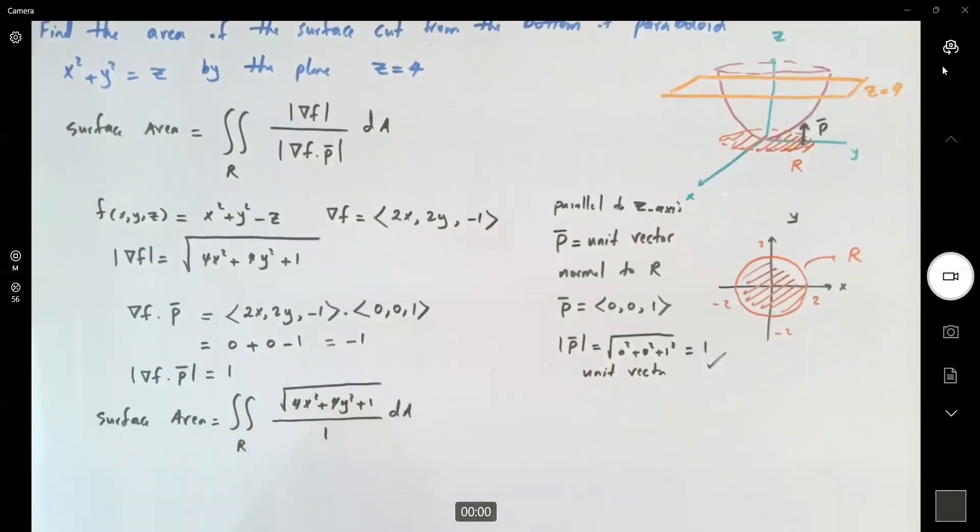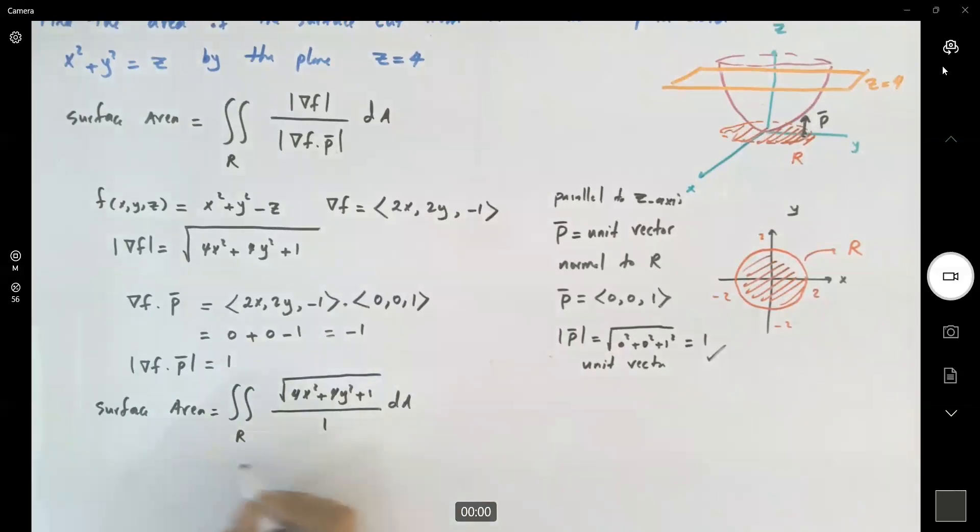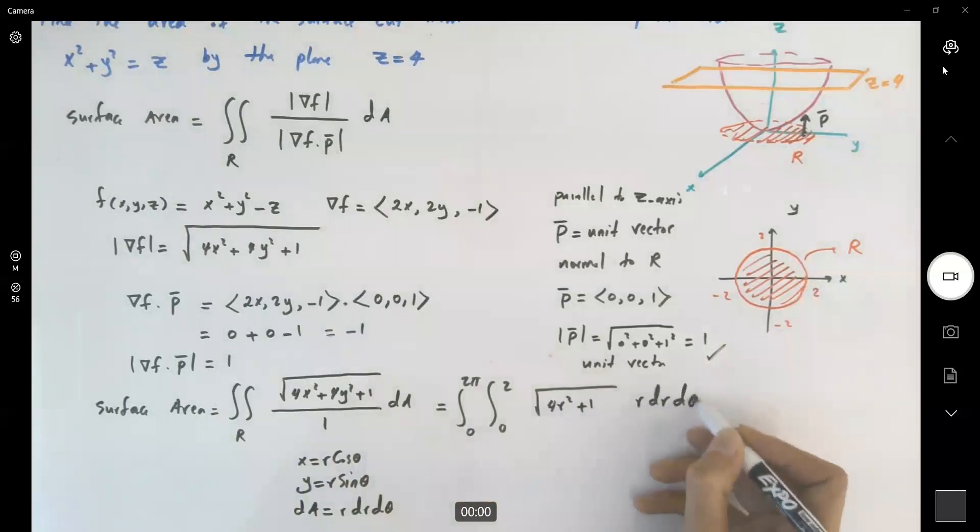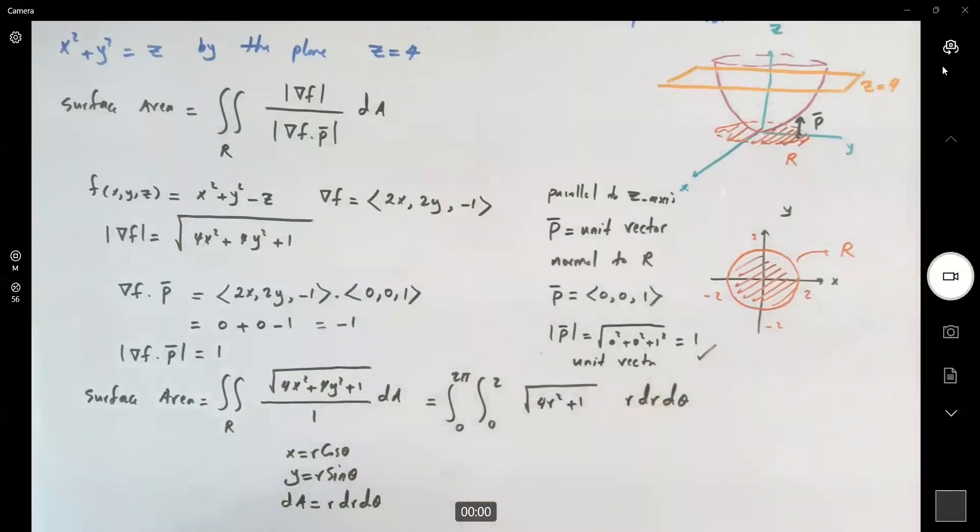This surface area is equal to the double integral 0 to 2π, 0 to 2. And here you have the square root of, where x is r cosine theta and y is r sine theta. Just substitute them here. And don't forget dA becomes r dr dθ, the area element. So here you have square root of 4r squared plus 1 times r dr dθ, which is just a simple u substitution.